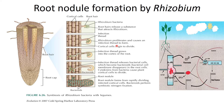Once rhizobium is incorporated inside the curled root hair, it proliferates and causes an infection thread to form. The infection thread is a hollow tube-like structure that extends inside the cell, formed from the plasma membrane. Through this pipe-like structure, rhizobium penetrates inside the cell, as seen in the figure. The infection thread keeps on growing and further extends into the cortex, reaching the inner cells.